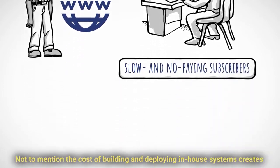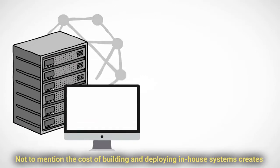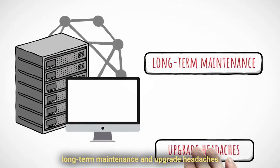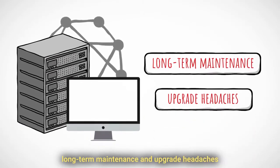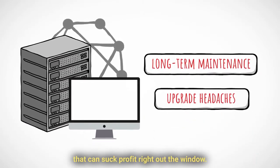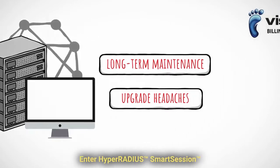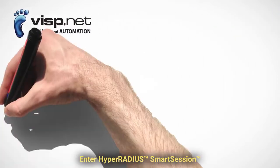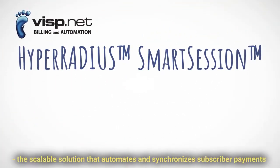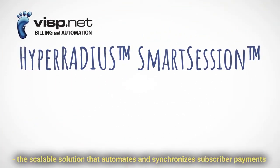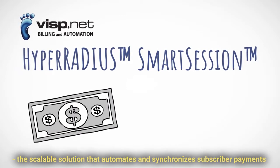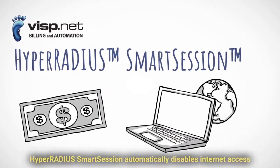Not to mention, the cost of building and deploying in-house systems creates long-term maintenance and upgrade headaches that can suck profit right out the window. Enter Hyper Radius Smart Session — the scalable solution that automates and synchronizes subscriber payments with their internet access.